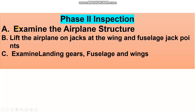Phase two inspection — examine the airplane structure. Lift the aircraft on jacks at the wing and fuselage jack points. Examine the landing gear, fuselage, and wings. You must go to Chapter 5 of your aircraft maintenance manual and follow the instructions there.